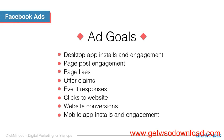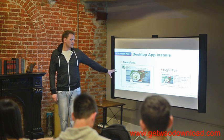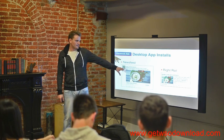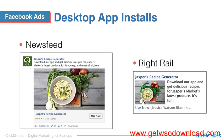So there's desktop app installs and engagement, page post engagement, page likes, offer claims, event responses, clicks to website, website conversions, and mobile app installs and engagement. With desktop app installs, you can get two different types: the first is in the newsfeed and the second is in the right rail. This would be an actual download on your desktop — you'd run a campaign like that.